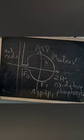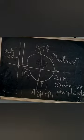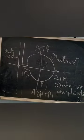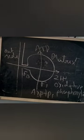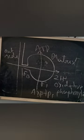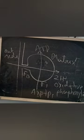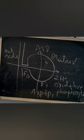Respiratory quotient (RQ) is the volume of CO2 evolved divided by the volume of O2 absorbed. The RQ values are: carbohydrates = 1, fats = 0.7, proteins = 0.9, organic acids = more than 1 (around 1.3), and in anaerobic respiration it is infinity. More than unity is obtained with malic acid — an organic acid. RQ gives the idea of how much oxygen is used and carbon dioxide is evolved.